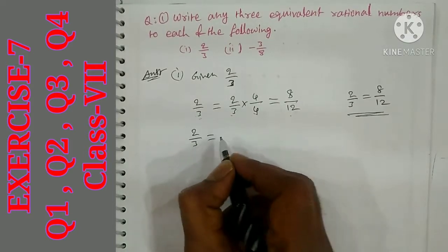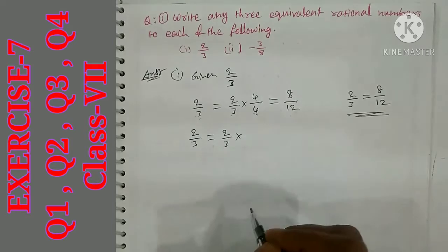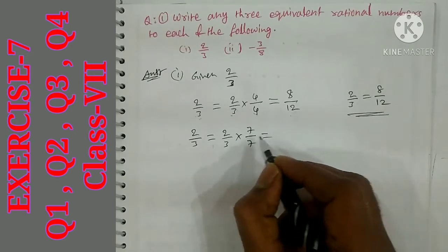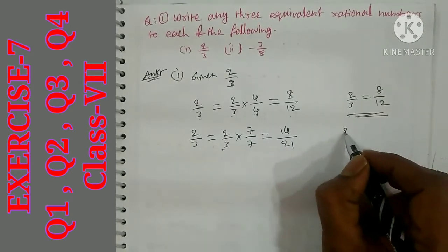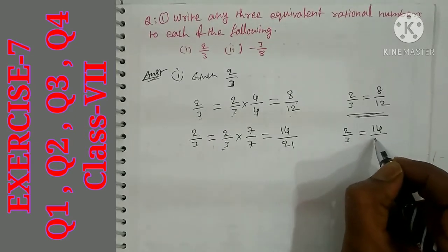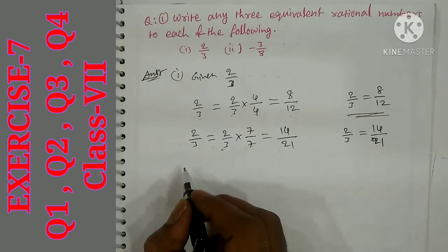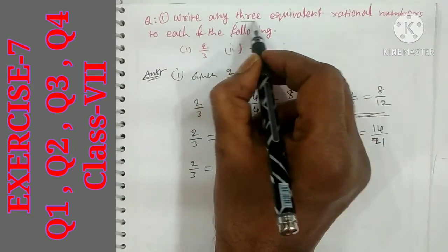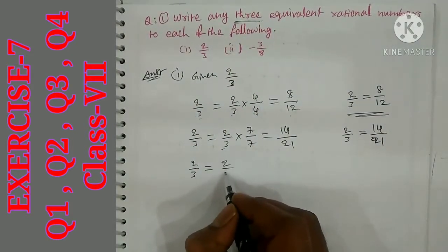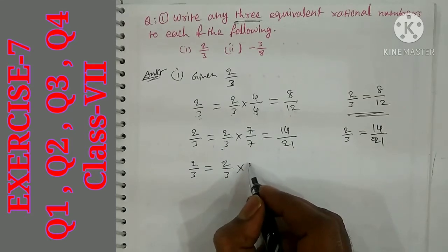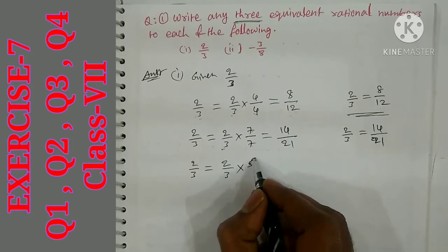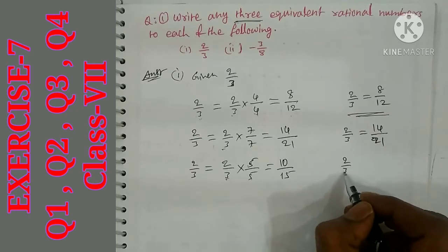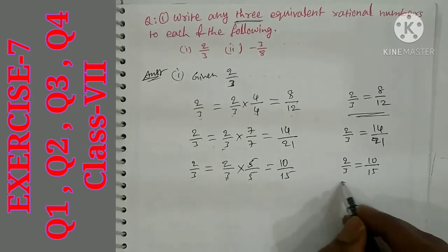Second equivalent: multiply 2 by 3 by 7 over 7. 7×2 = 14, 7×3 = 21. So 2 by 3 is equal to 14 by 21. Third equivalent: multiply by 5 over 5. 5×2 = 10, 5×3 = 15. So 2 by 3 is equal to 10 by 15.